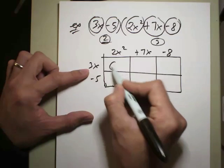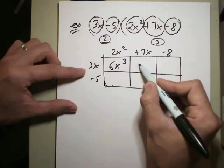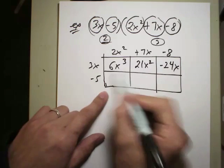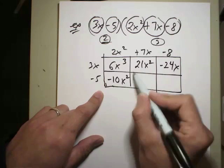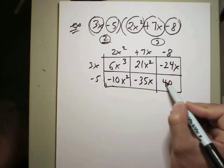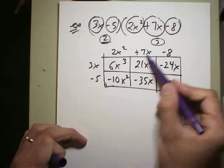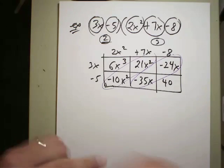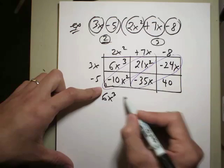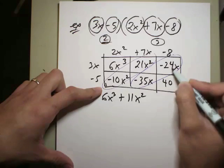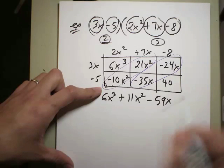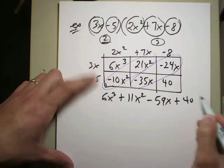3x times 2x squared, that's 6x to the third. This box right here is 3x times 7x, so that's 21x squared. This is 3x times negative 8, that's negative 24x. Down here now is 2x squared times negative 5, that's negative 10x squared. This is 7x times negative 5, that's negative 35x. And this is negative 8 times negative 5, which is positive 40. And once again, if you look diagonally, you already have like terms. And you can just go ahead and start combining them. So, 6x to the third, negative 10x squared plus 21x squared is going to give you positive 11x squared. Negative 35x minus 24x is going to give you negative 59x. And this one's going to give you 40. So there you have it.